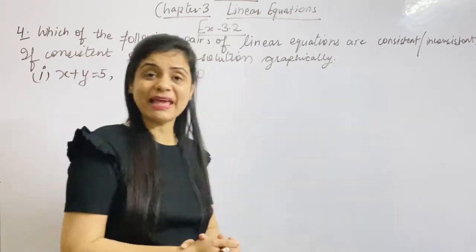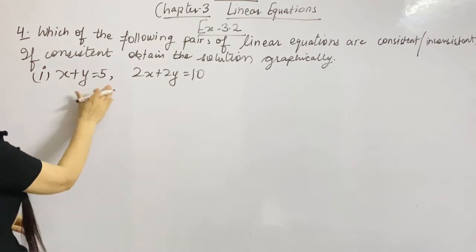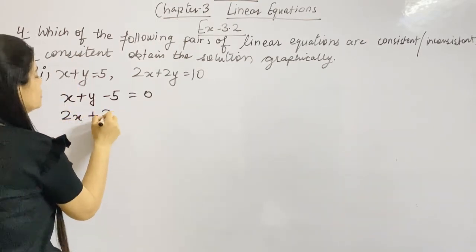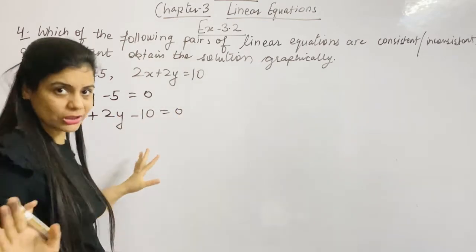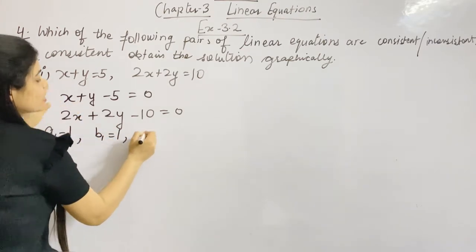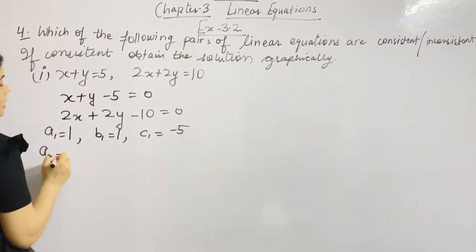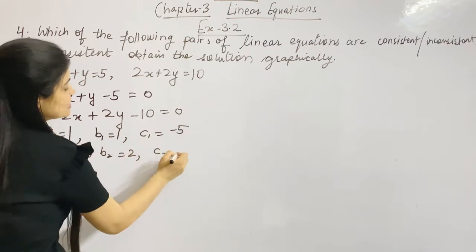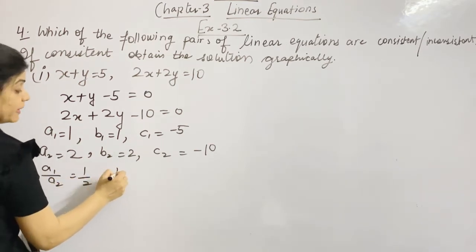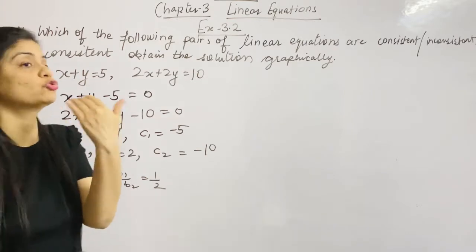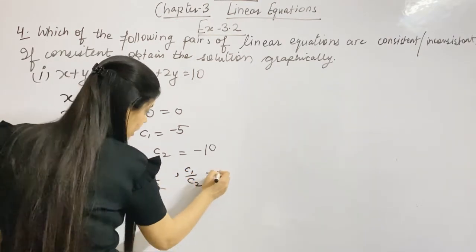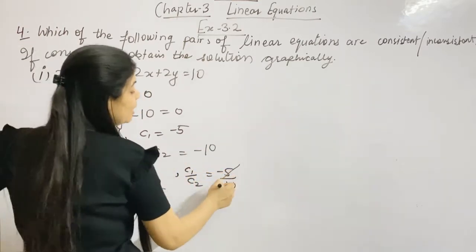So let's first check whether the first part is a consistent case. These are my two equations. Now a1 is the coefficient of x in equation one, b1 is the coefficient of y, and c1 is the constant term. Similarly a2, b2, c2 for equation two. A1 upon A2 is 1 upon 2, and B1 upon B2 is again 1 upon 2.